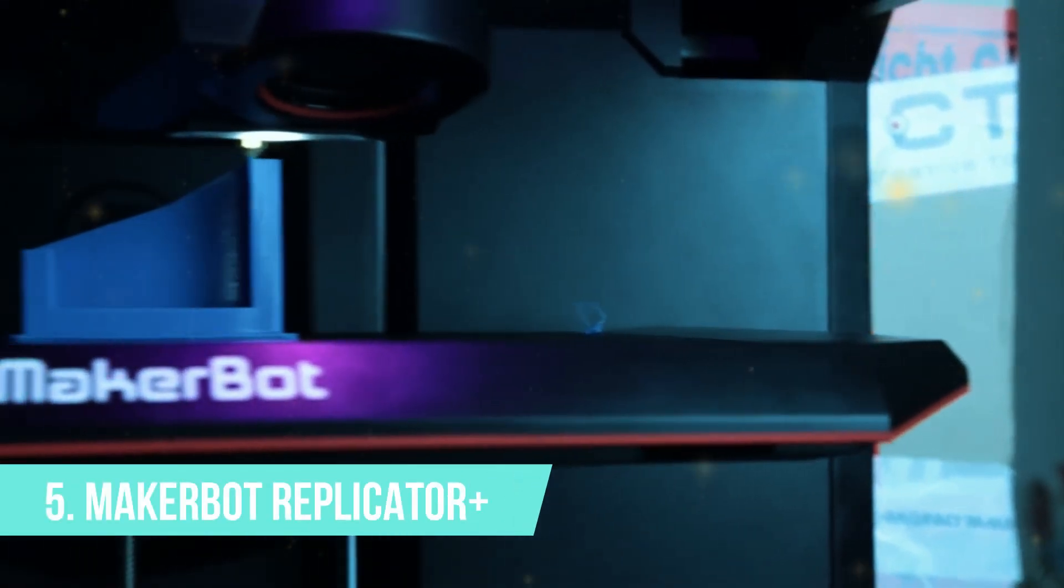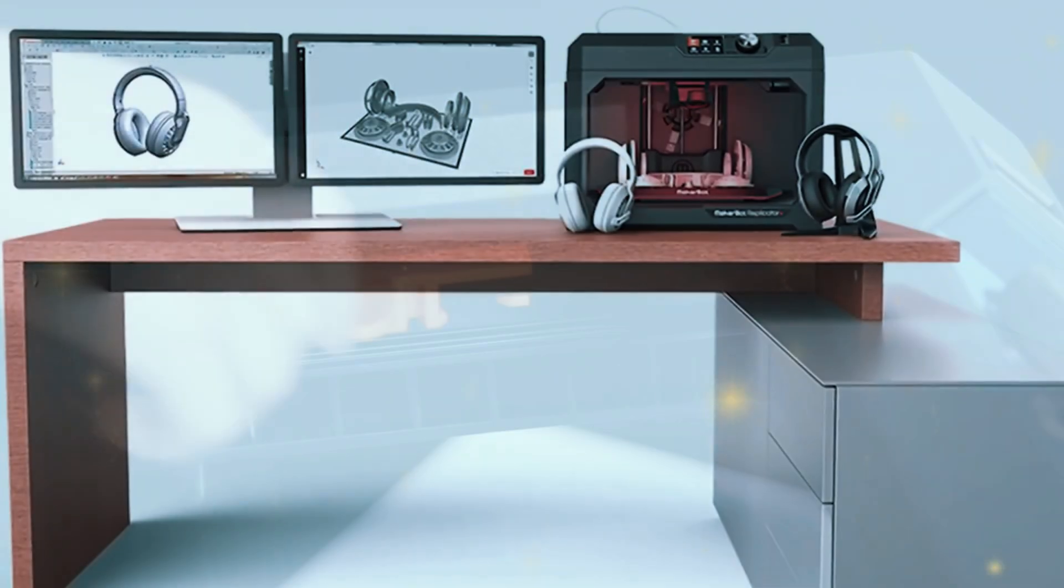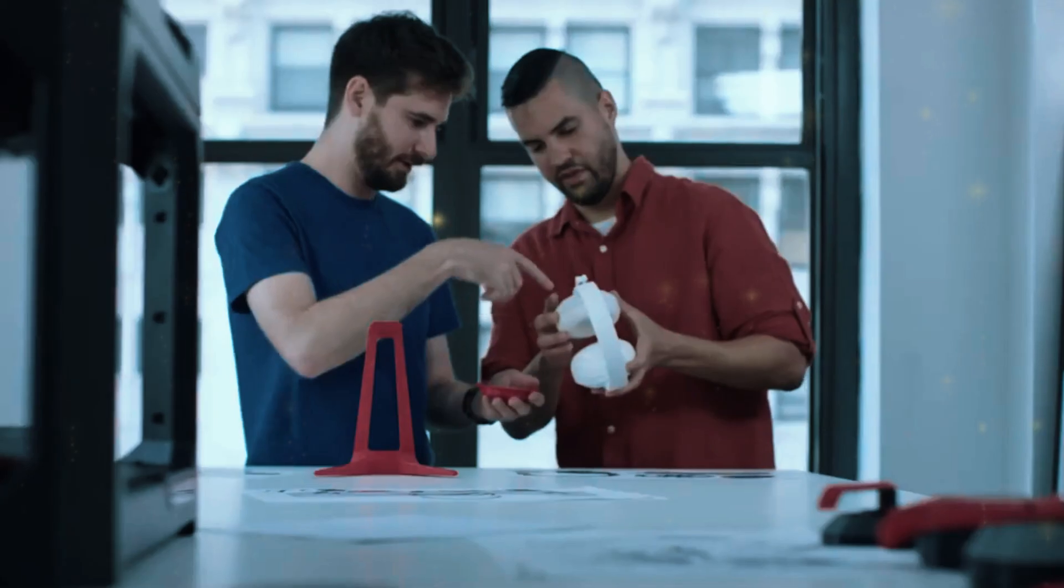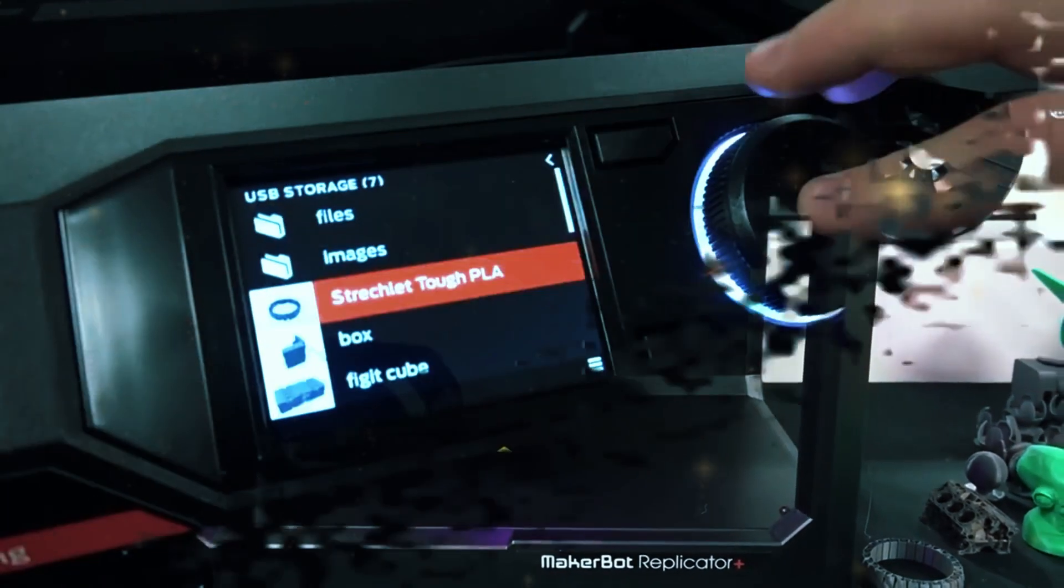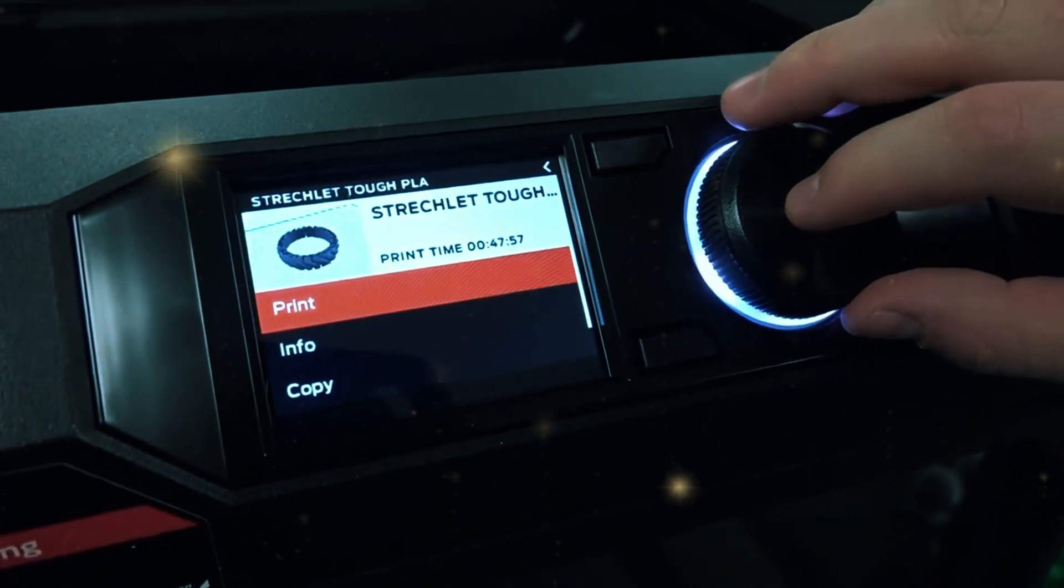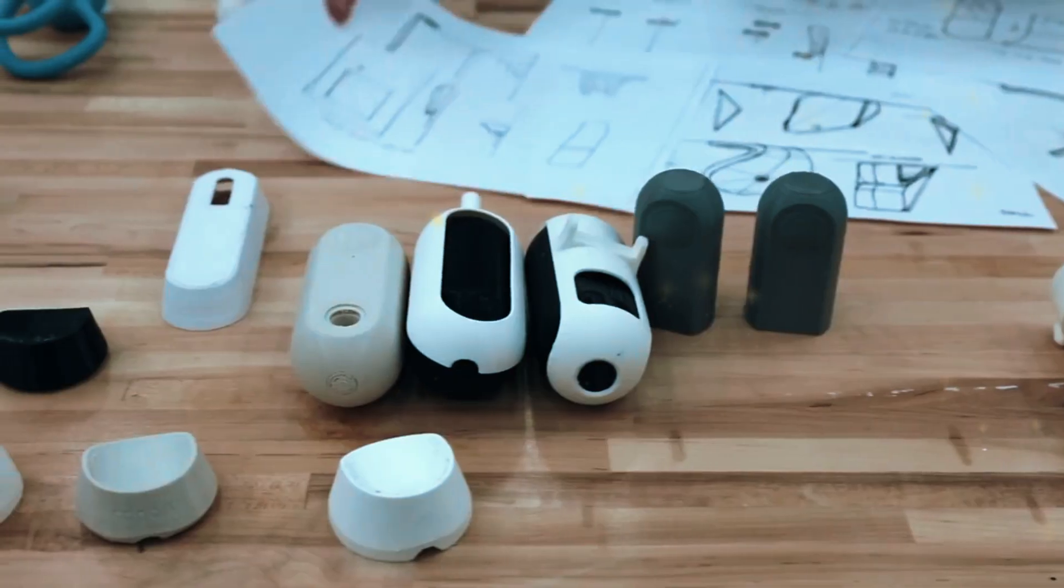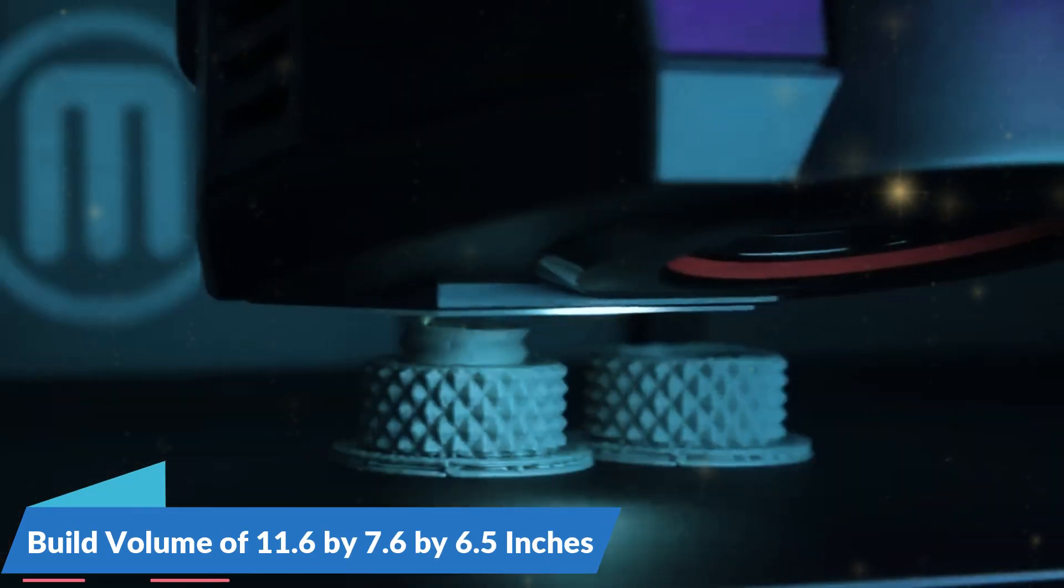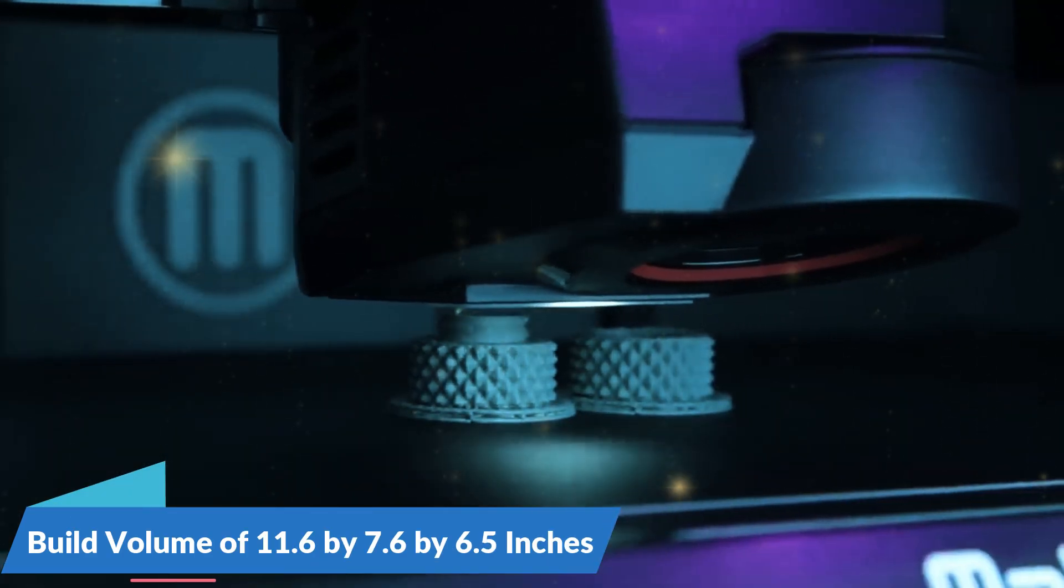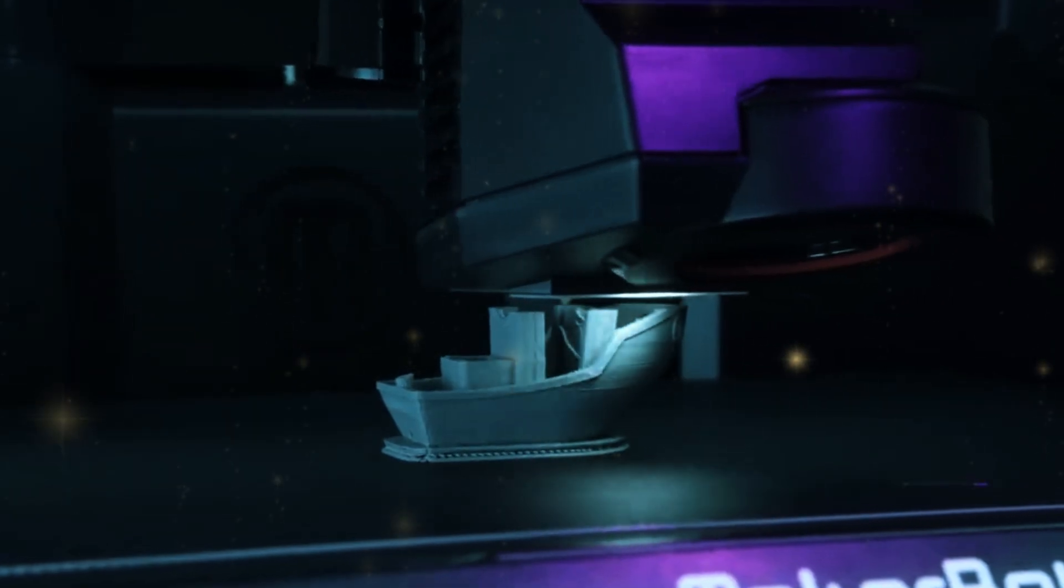Number 5, MakerBot Replicator Plus. First on our list is the MakerBot Replicator Plus, a name synonymous with reliability and performance in the world of 3D printing. The MakerBot Replicator Plus is known for its exceptional ease of use, making it an excellent choice for both beginners and professionals who need a dependable machine. This printer offers a build volume of 11.6 by 7.6 by 6.5 inches, allowing you to tackle a wide range of projects, from small trinkets to larger prototypes.